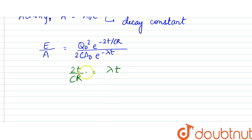When we apply logarithm on both the sides, from here lambda would be equal to 2 by CR. t cancels out.